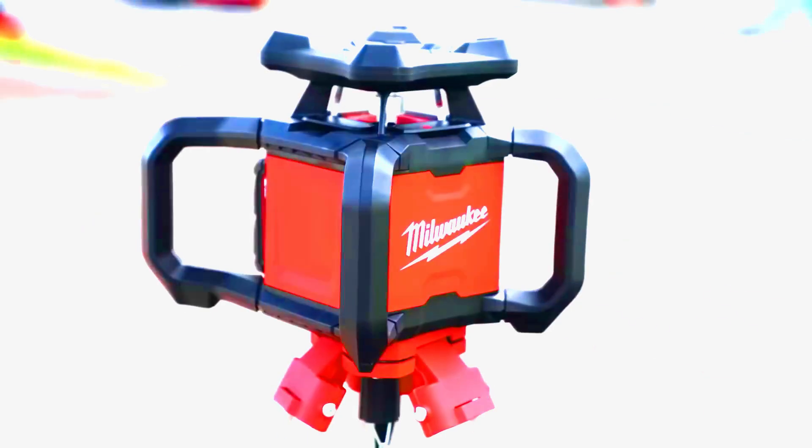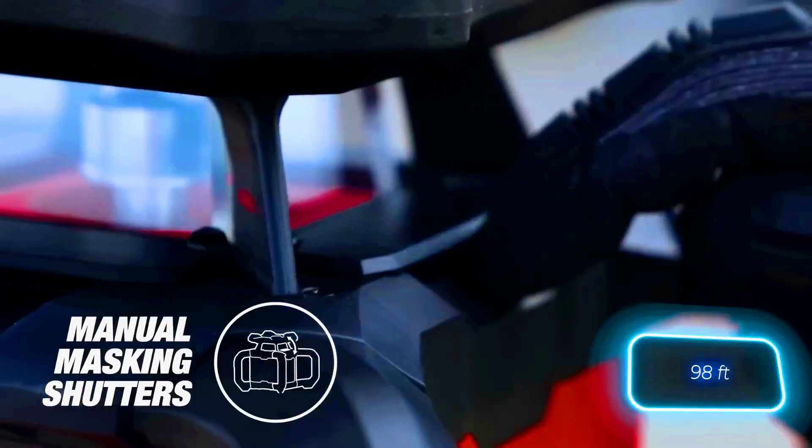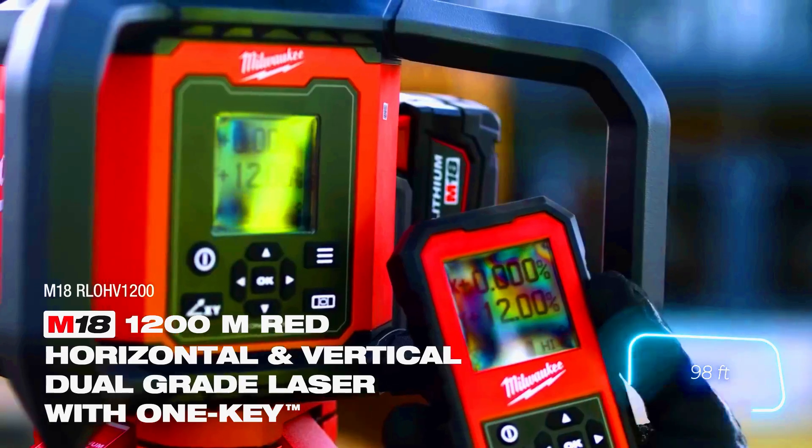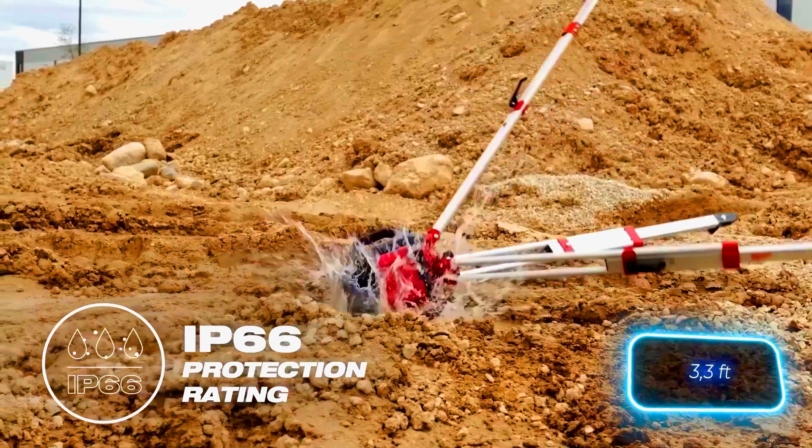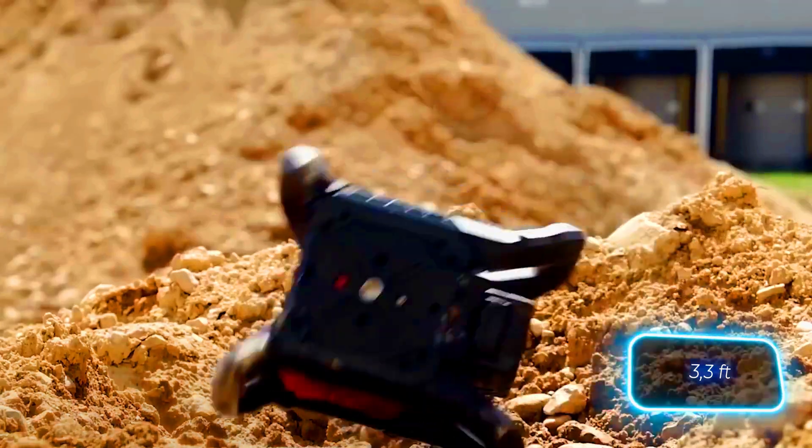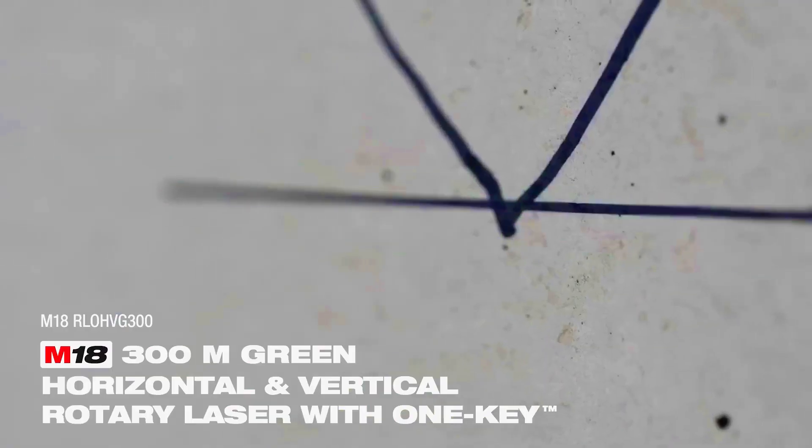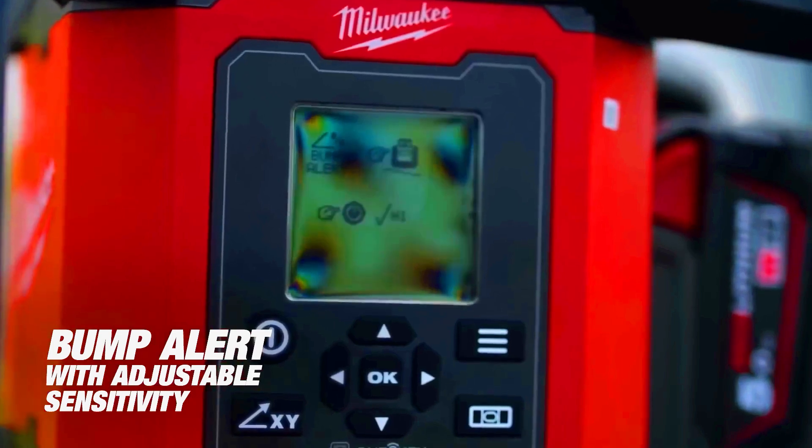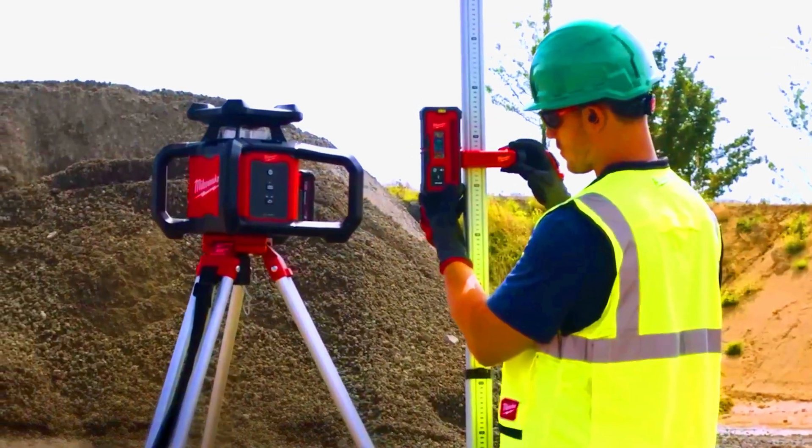The model boasts an accuracy of plus or minus 1.6 millimeters at 30 meters. The robust housing ensures it can withstand a 1.5-meter drop. The 300M is priced at a substantial $2,613.